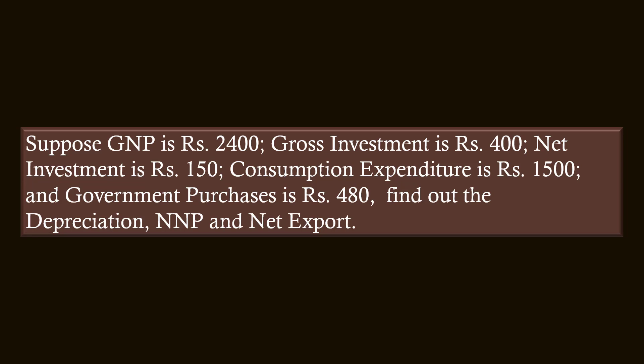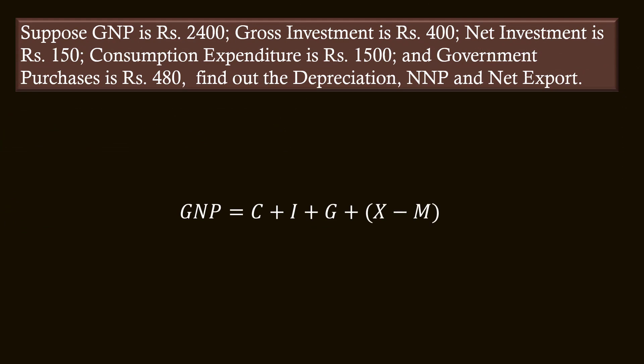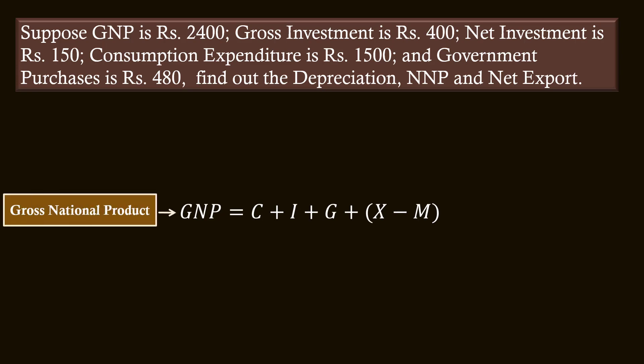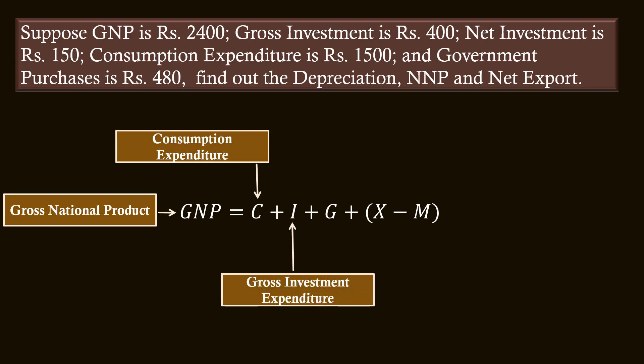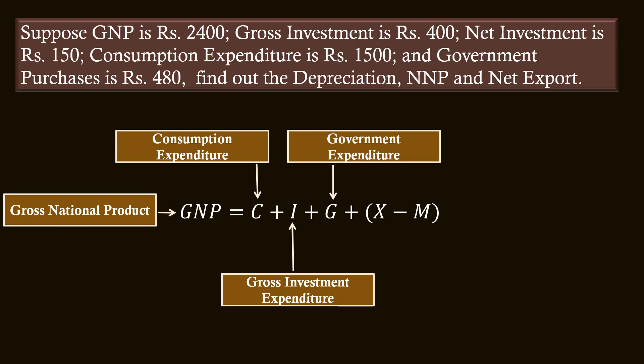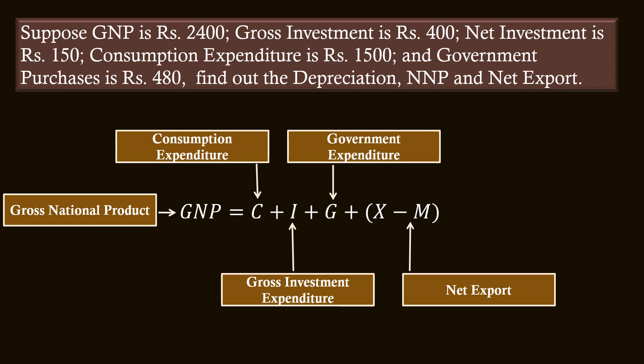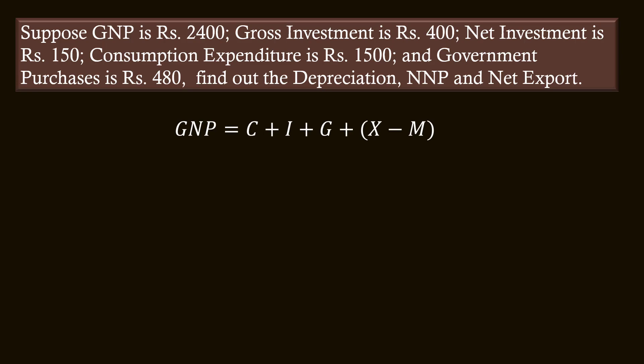First, understand the problem. The components — Gross Investment, Net Investment, Consumption Expenditure, and Government Purchases — are relating to the expenditure method of calculating national income. Government purchases are nothing but Government expenditure. The expenditure method formula GNP = C + I + G + (X − M) is to be used to solve this problem. Here, GNP is Gross National Product, C is Consumption Expenditure, I is Gross Investment, G is Government Expenditure, and X minus M is Net Export.